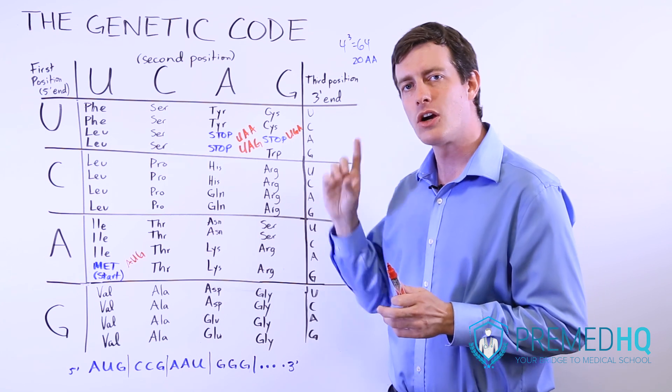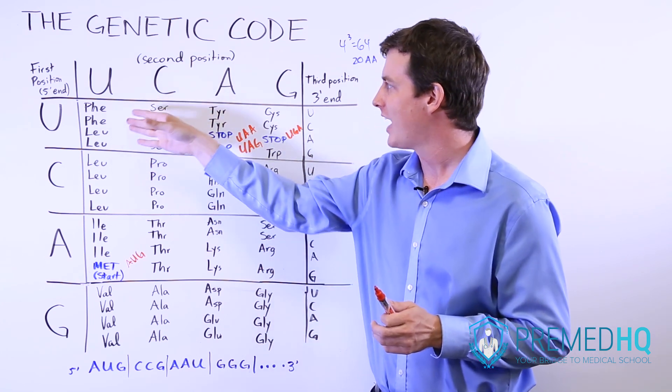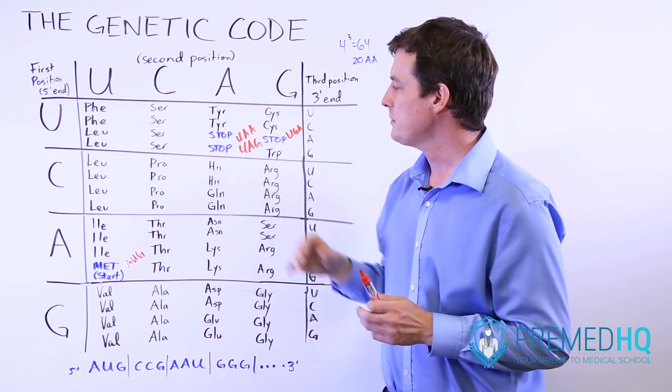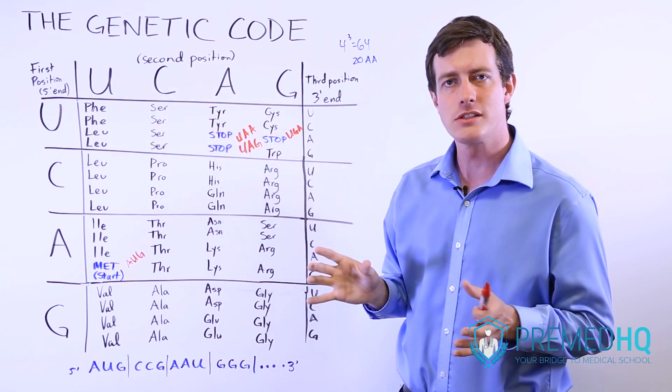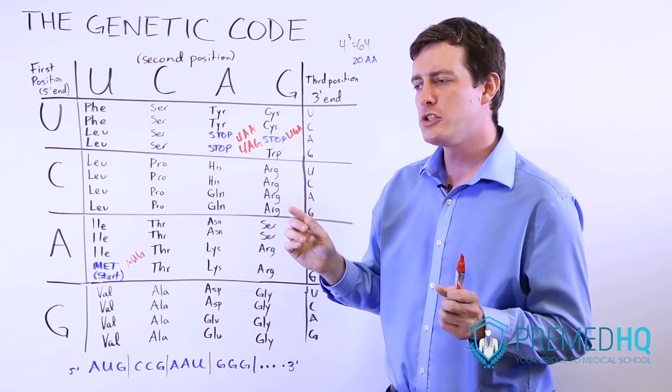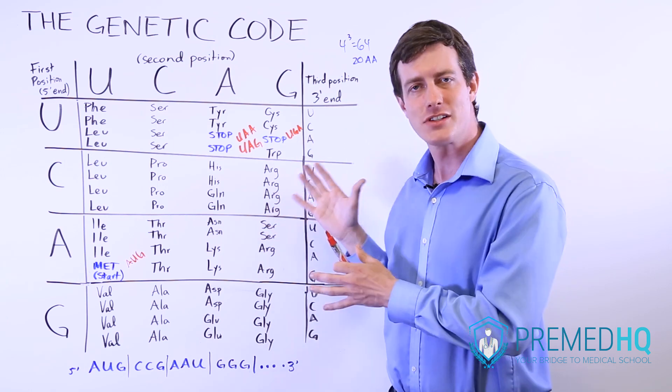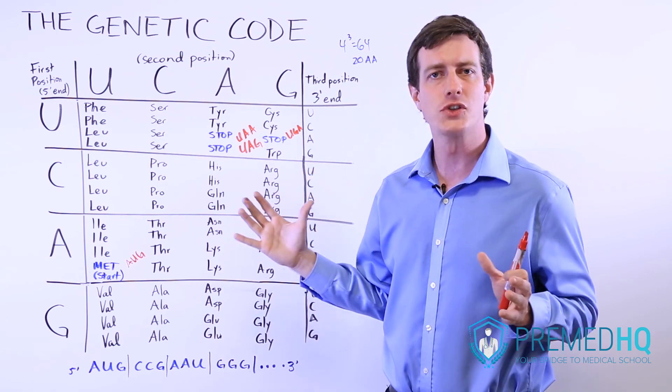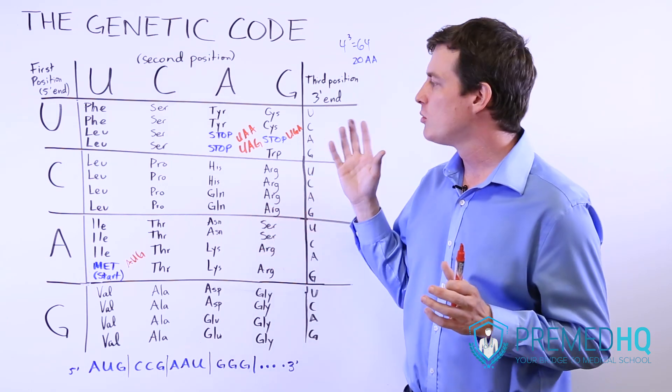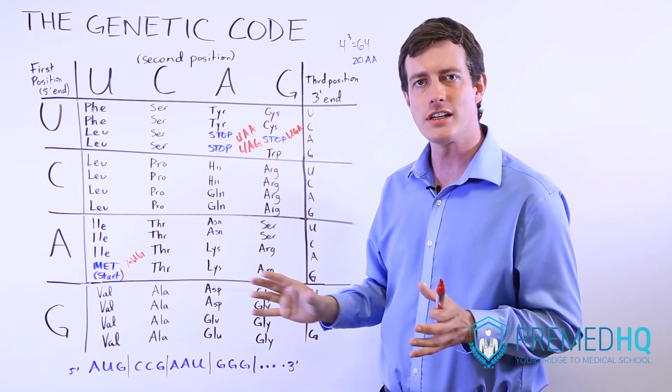So of the point mutations, there are silent mutations, which just happen to code for the exact same amino acid. There are missense mutations, which may or may not be a significant thing, where you change the identity of one amino acid, and that may or may not have a significant effect on the resulting protein. And then there will be nonsense mutations, and those prematurely stop it, and those are highly significant.